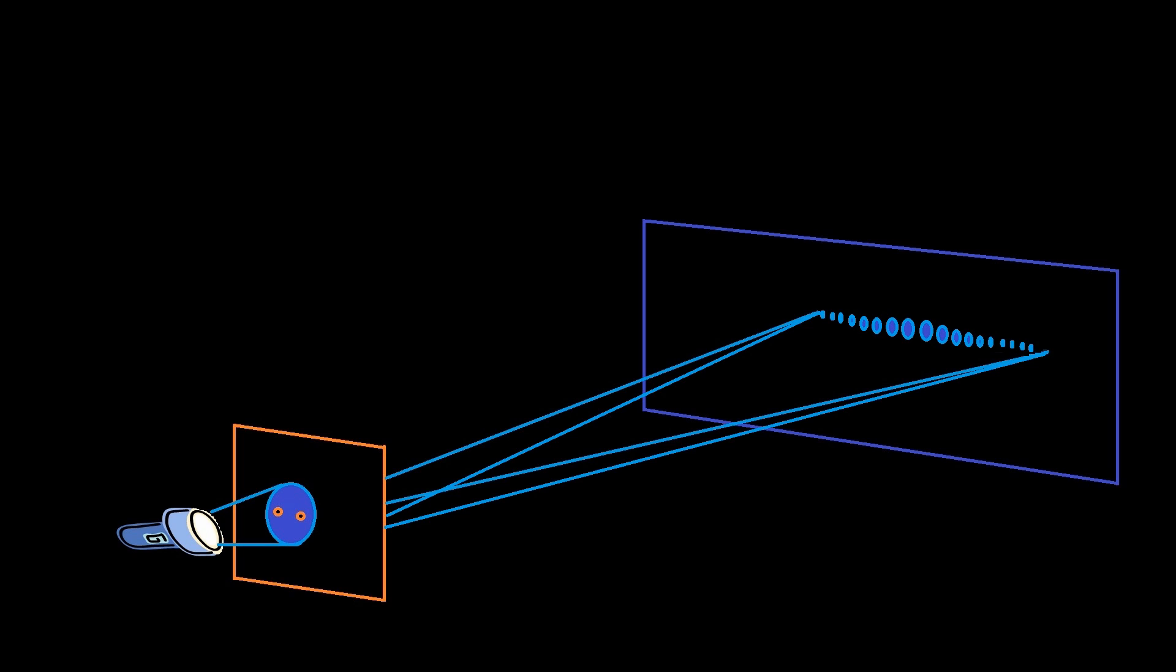You might know about the double-slit experiment which proved that light is a wave. The interference pattern says that every single photon collides with itself and behaves like a wave. Complementarity accounts for this behavior.